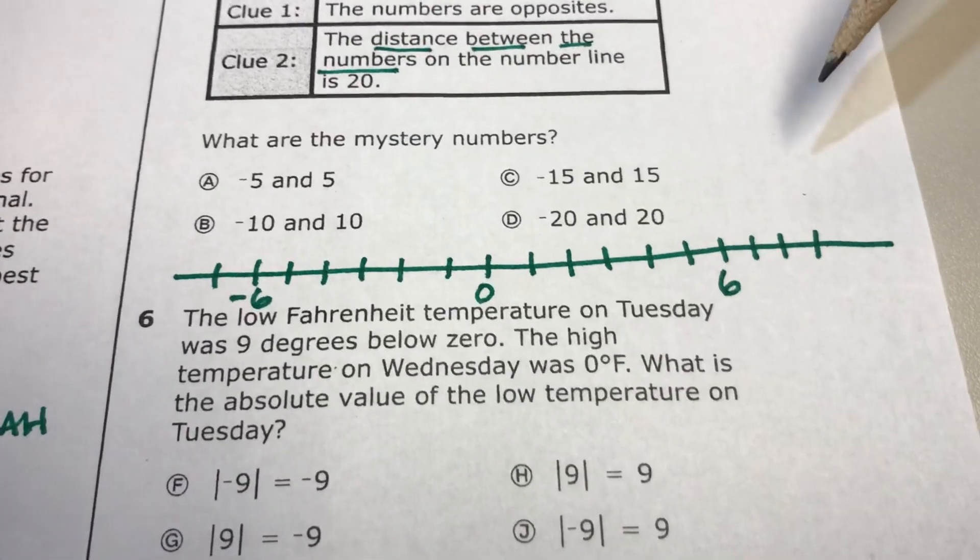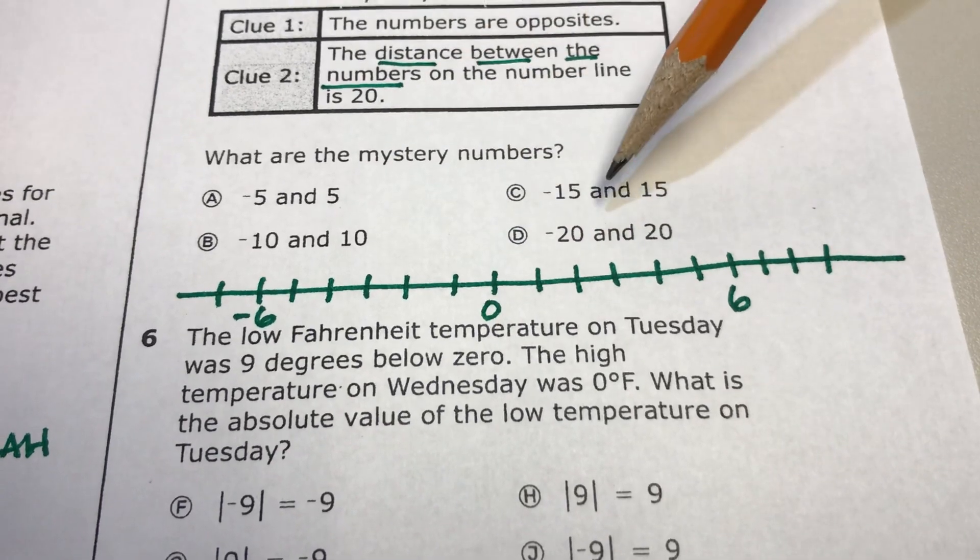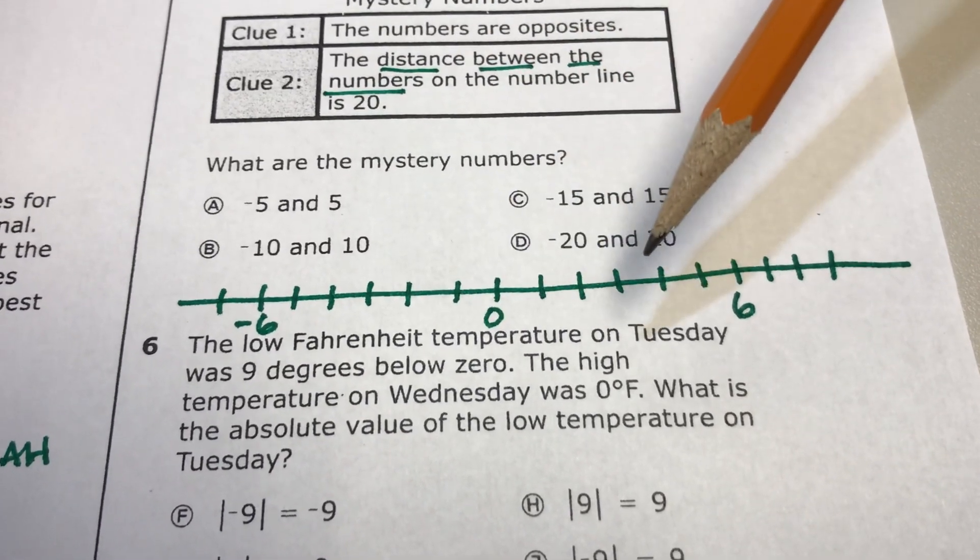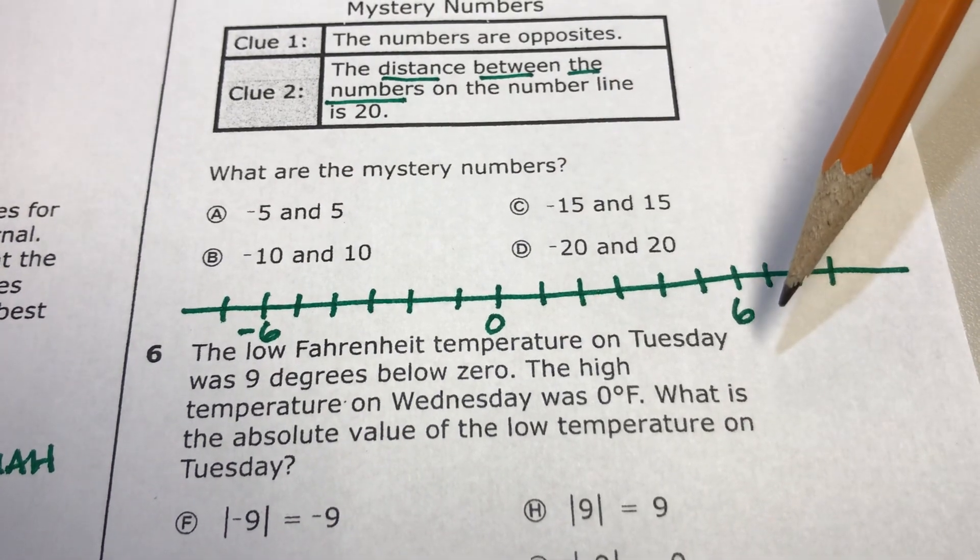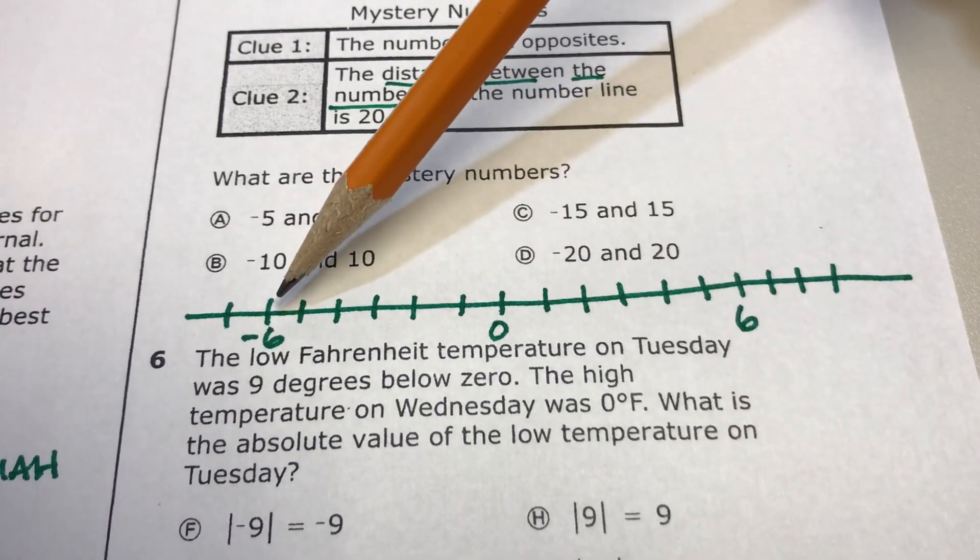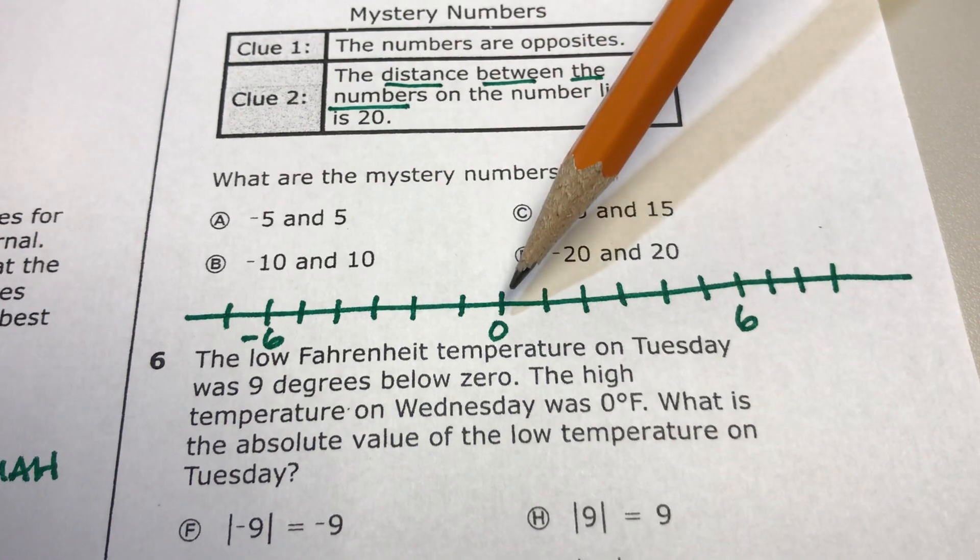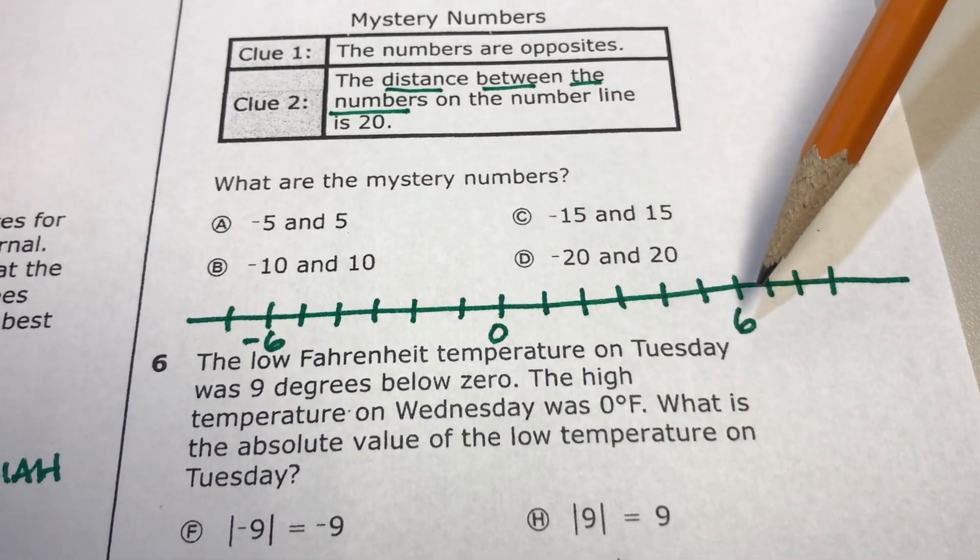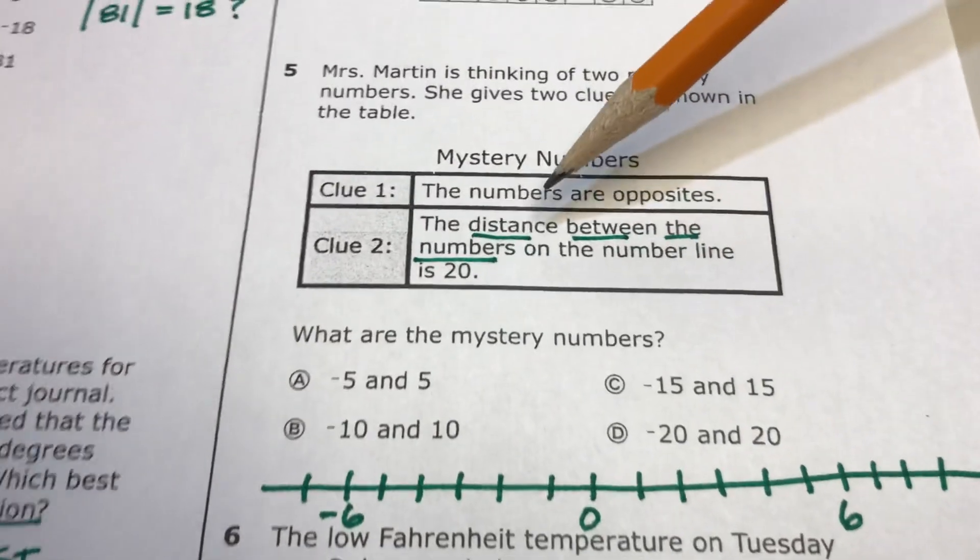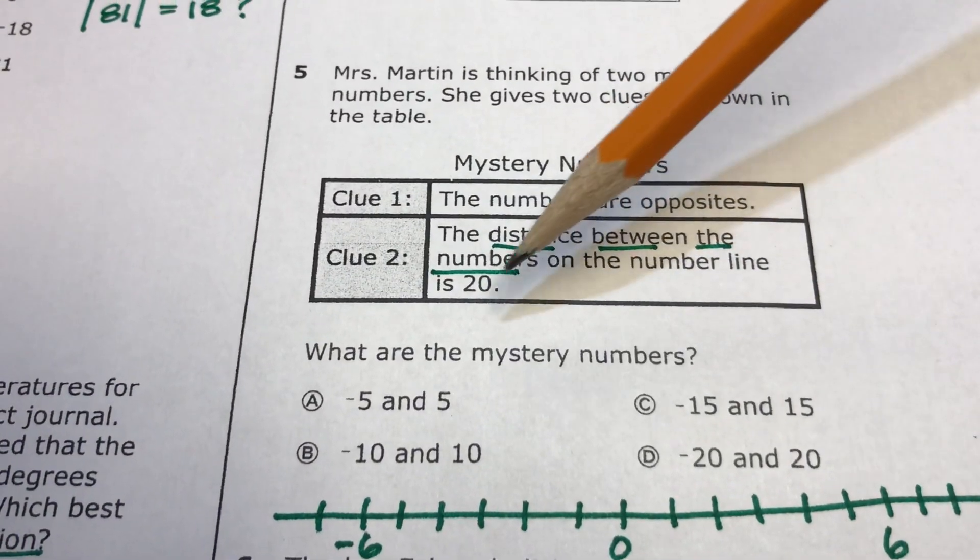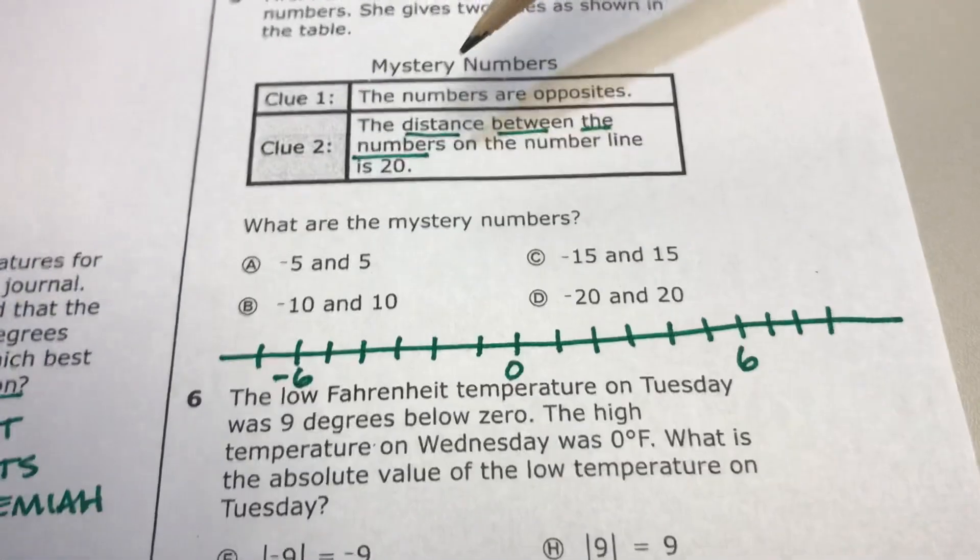Here's an example for you. Imagine one of these answer choices says six and negative six. The distance between negative six and six is, obviously, there's six jumps to get to zero, and there's six more to get to positive six, so the distance between the two numbers is a total of 12. You're looking for a distance between the two numbers that's a total of 20, so that's just a way to help you out tonight on your homework.